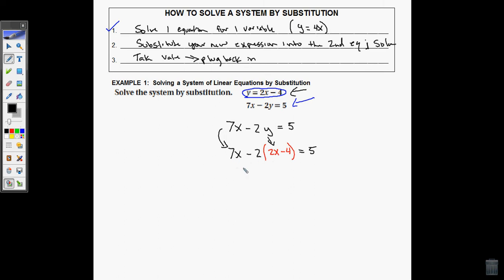I'm going to distribute first. So bring down the 7x. Negative 2 times 2x, negative 4x. Negative 2 times negative 4 is positive 8, equals 5. Combine like terms. 7x minus 4x is 3x, plus 8 equals 5. Subtract 8. 3x equals negative 3. And divide by 3 finally to get x equals negative 1.